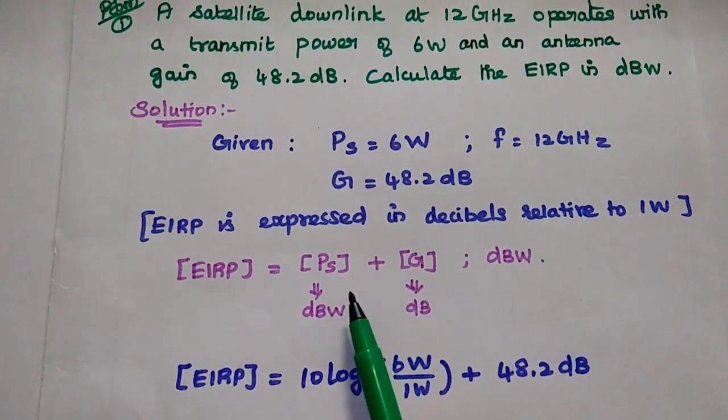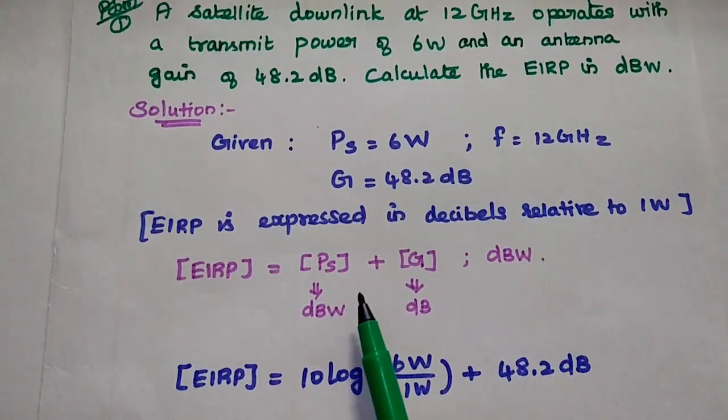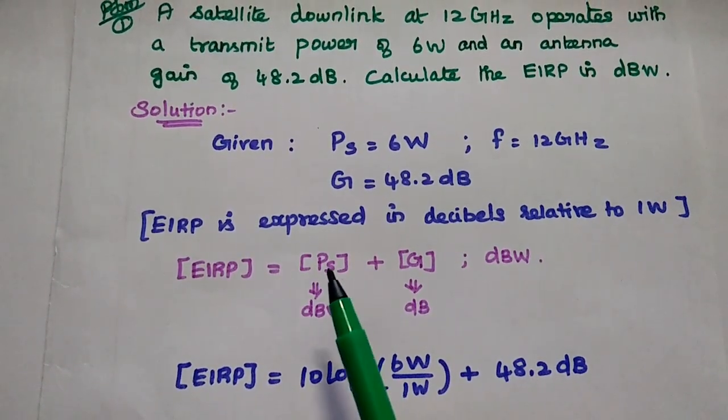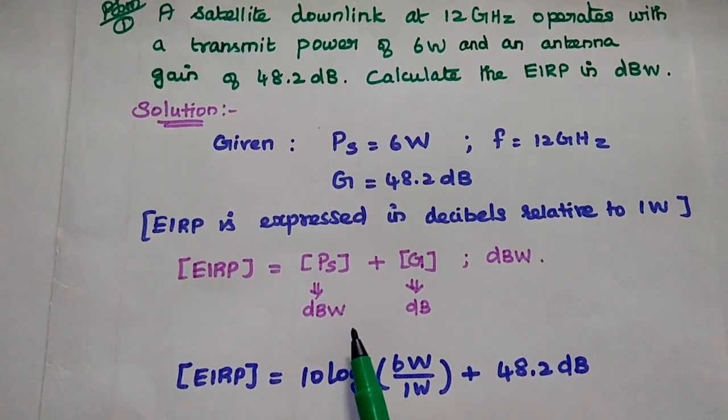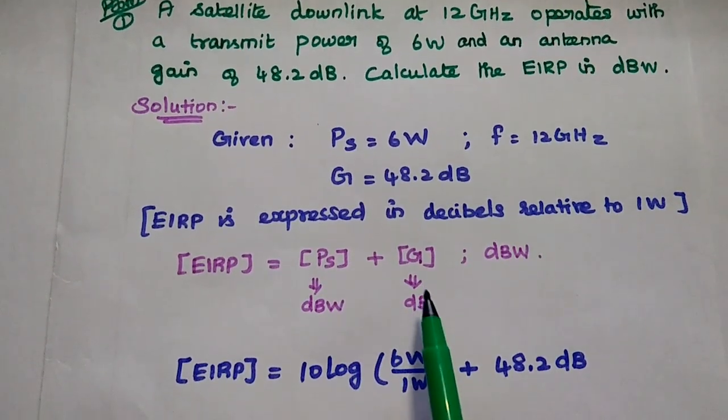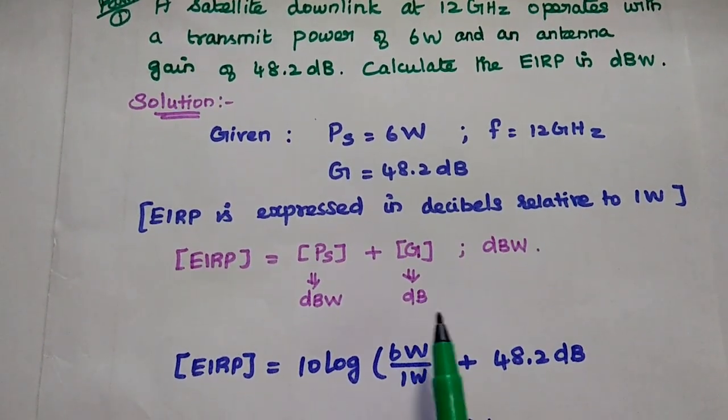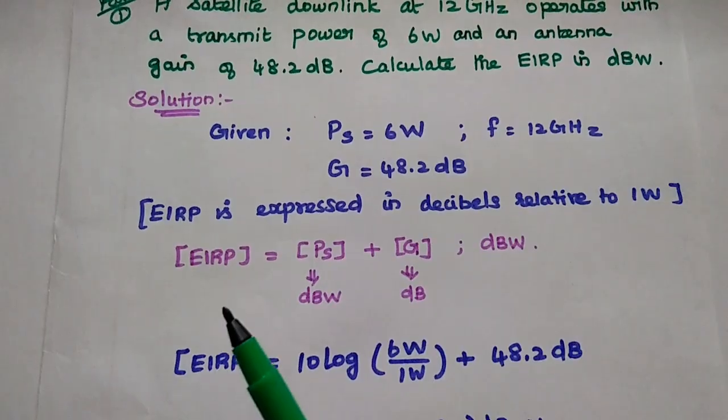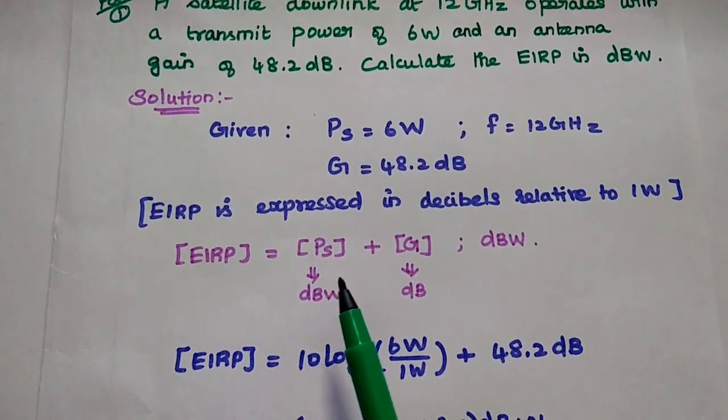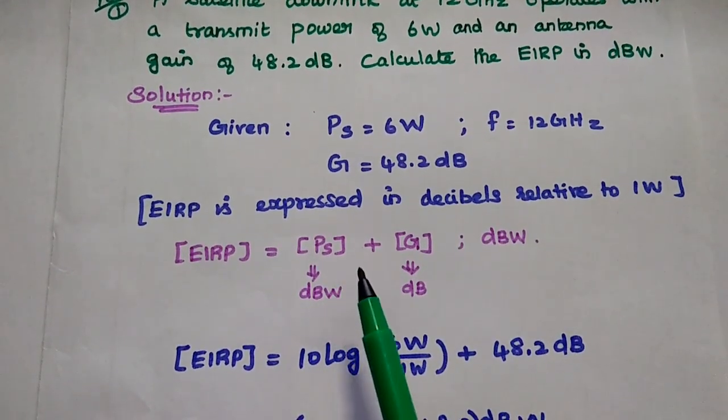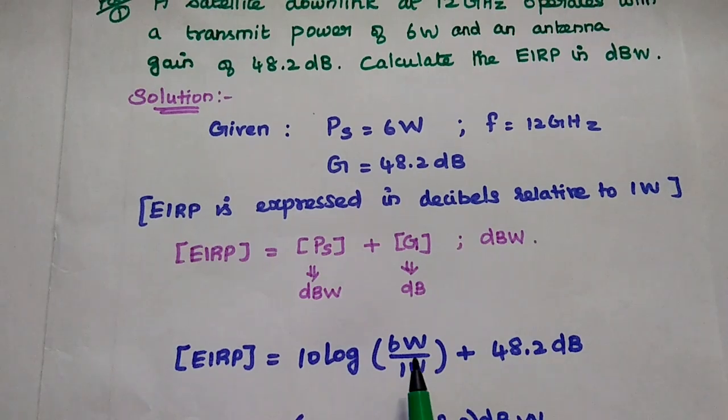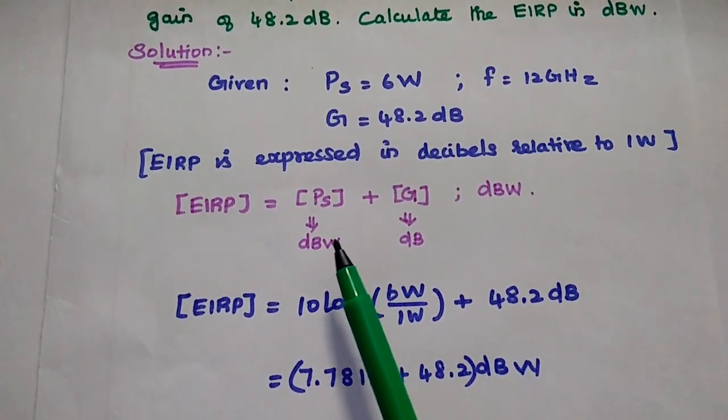The square bracket represents the values are in dB. For this power, the value is dBW. For gain, its unit is dB only. Here EIRP is equal to PES, that is the transmit power plus gain. Next we have to substitute these values.